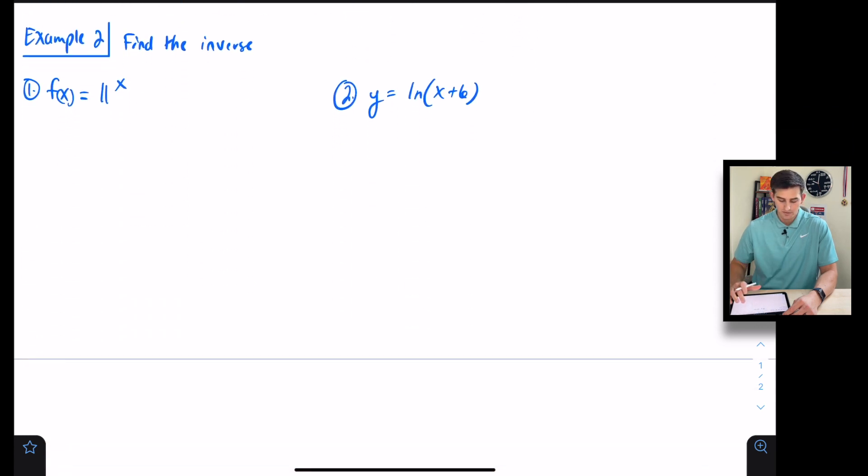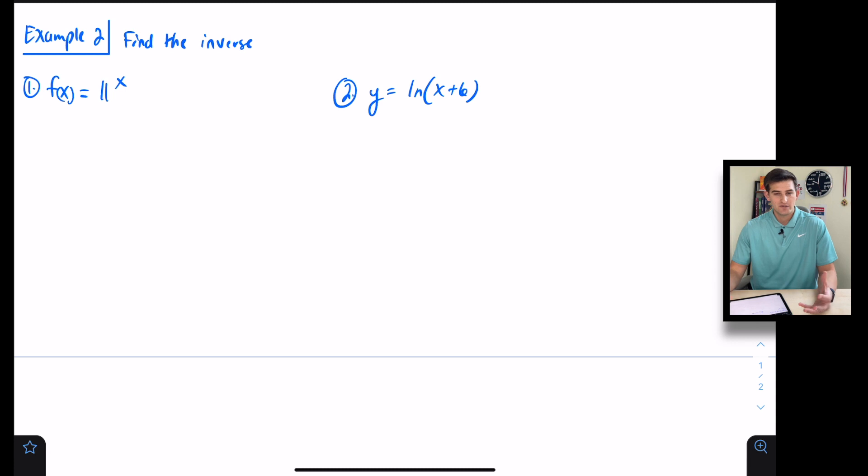Now let's find the inverse of a couple here. We find the inverse the same way—we want to switch x and y. First, let's change f(x) to y, then switch the roles of x and y. To help us see this better, I'm going to switch the sides so I'll write this as 11^y = x.